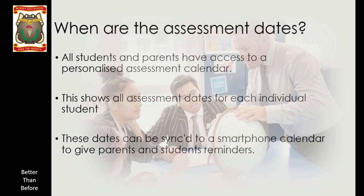Assessment dates: there is continuous assessment throughout the year. These are available through the parent portal — you can access them digitally — and that will really help your child manage their study at home, knowing when assessments are coming. This is a live assessment calendar, which is better than paper versions because sometimes assessment dates aren't fixed and have to be moved — for example, due to COVID lockdowns or school events. The calendar can also be synced to a smartphone so that students can have reminders coming up.